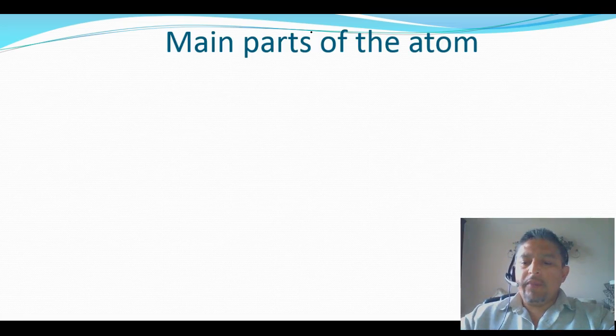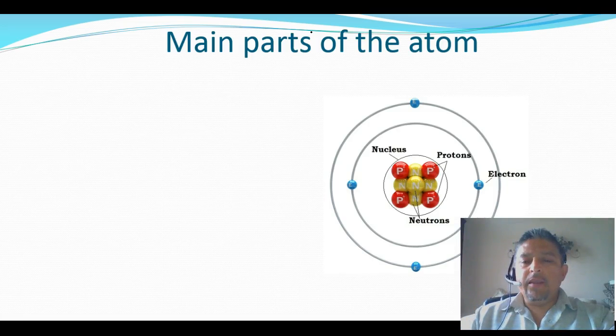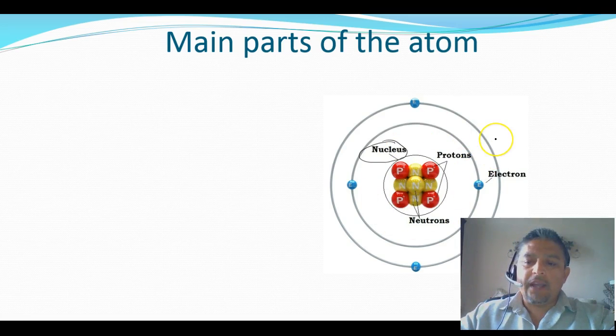Let's start by mentioning the main parts of the atom. We can see here a simple atomic structure. We can see the title over here where the nucleus is, and we can see several of the particles like the protons which are the red ones, the neutrons which are the yellow ones, and the electrons floating around the nucleus of the atom.